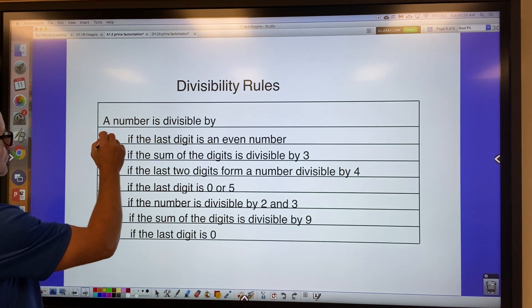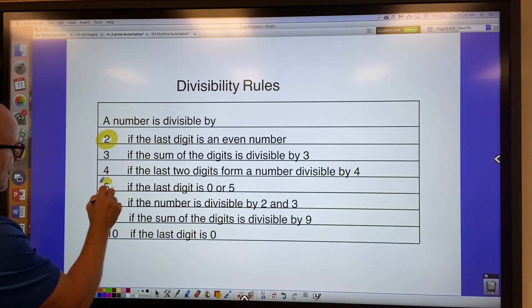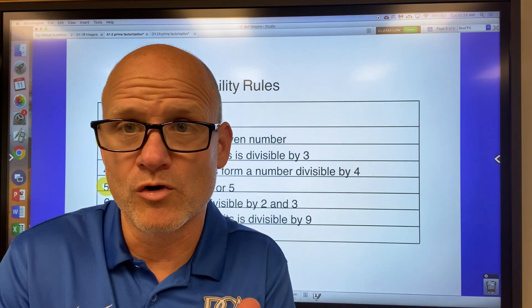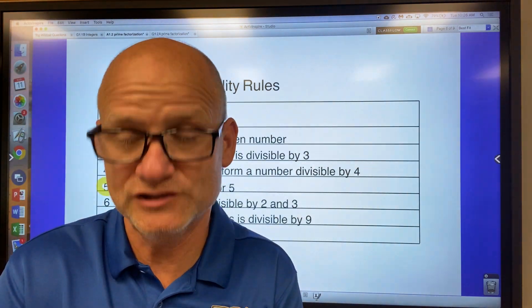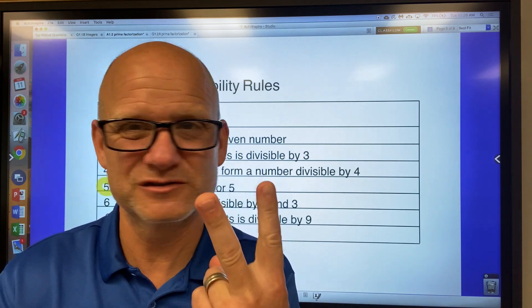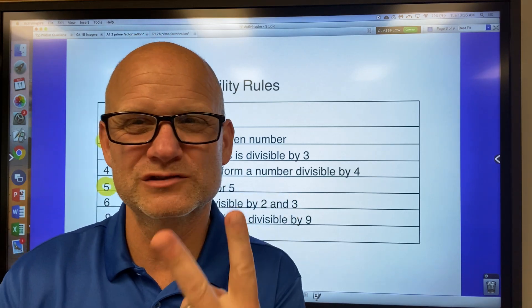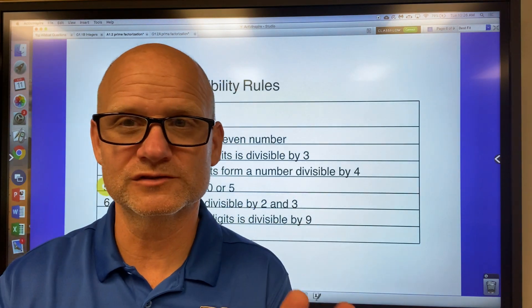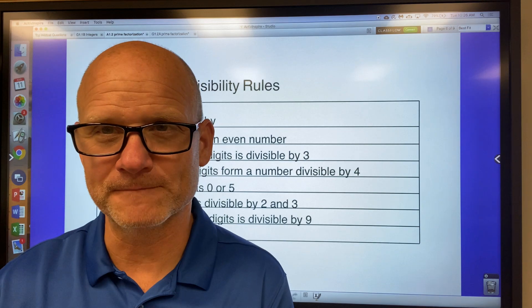All of you guys know the divisibility rules of 2, 5, and 10. I mean, you just know that. You know right now that 222 is divisible by 2. But you also know 222 is not divisible by 5. And you also know 222 is not divisible by 10. So you already know the divisibility rules of 2, 5, and 10. You just know that.